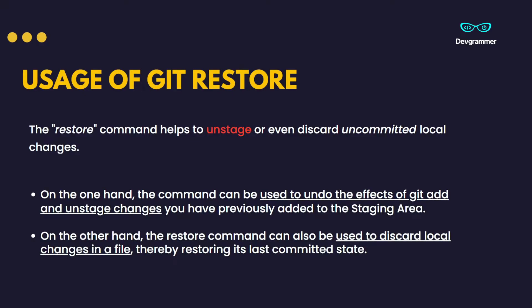Let's see the uses of git restore. The git restore command helps us to unstage or discard uncommitted local changes — and uncommitted is the important word here. There are particularly two use cases of git restore. The first one is to undo the effect of git add, which is used for staging files. The second use case is to discard the local changes in our file, which are uncommitted of course.